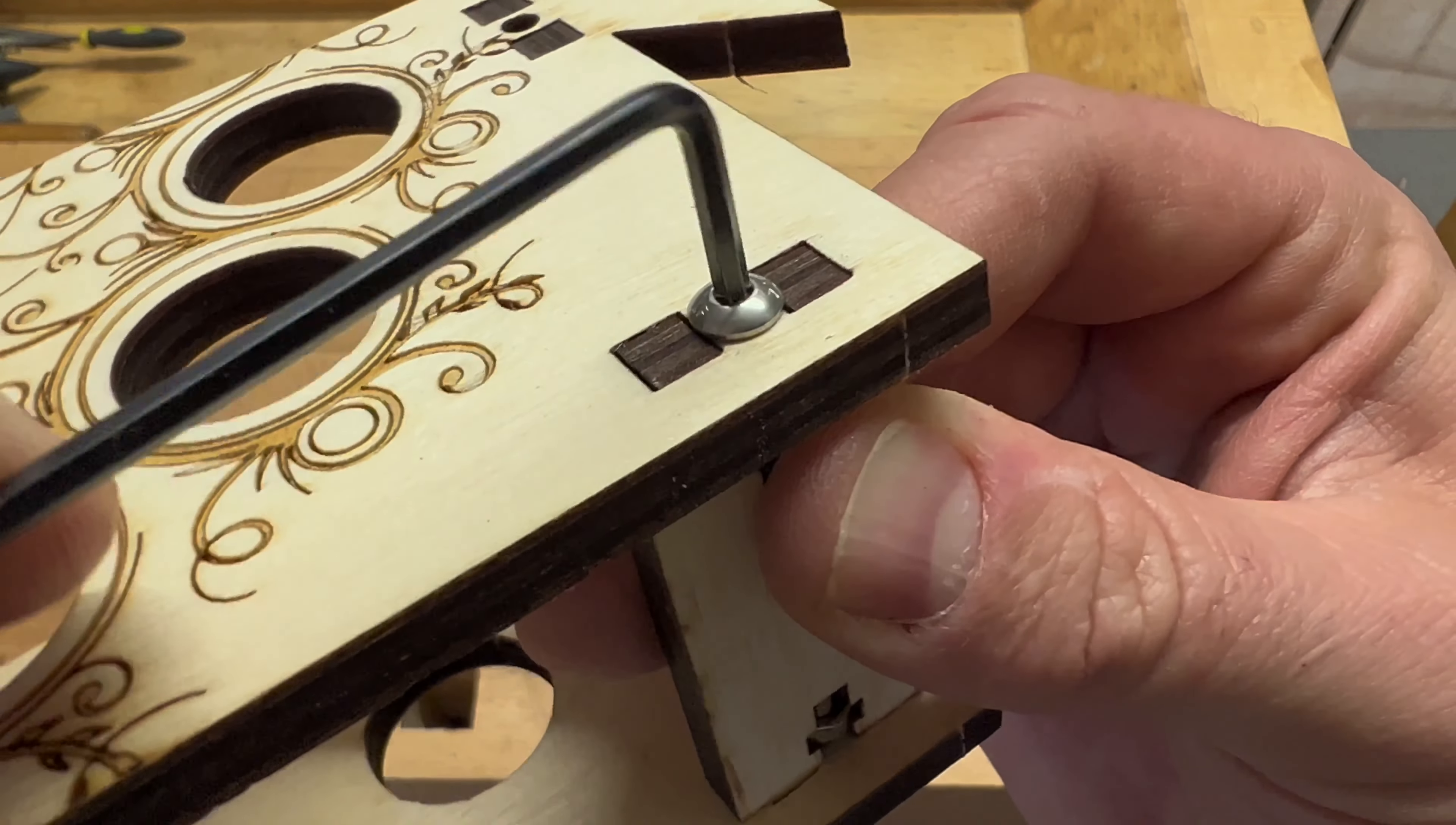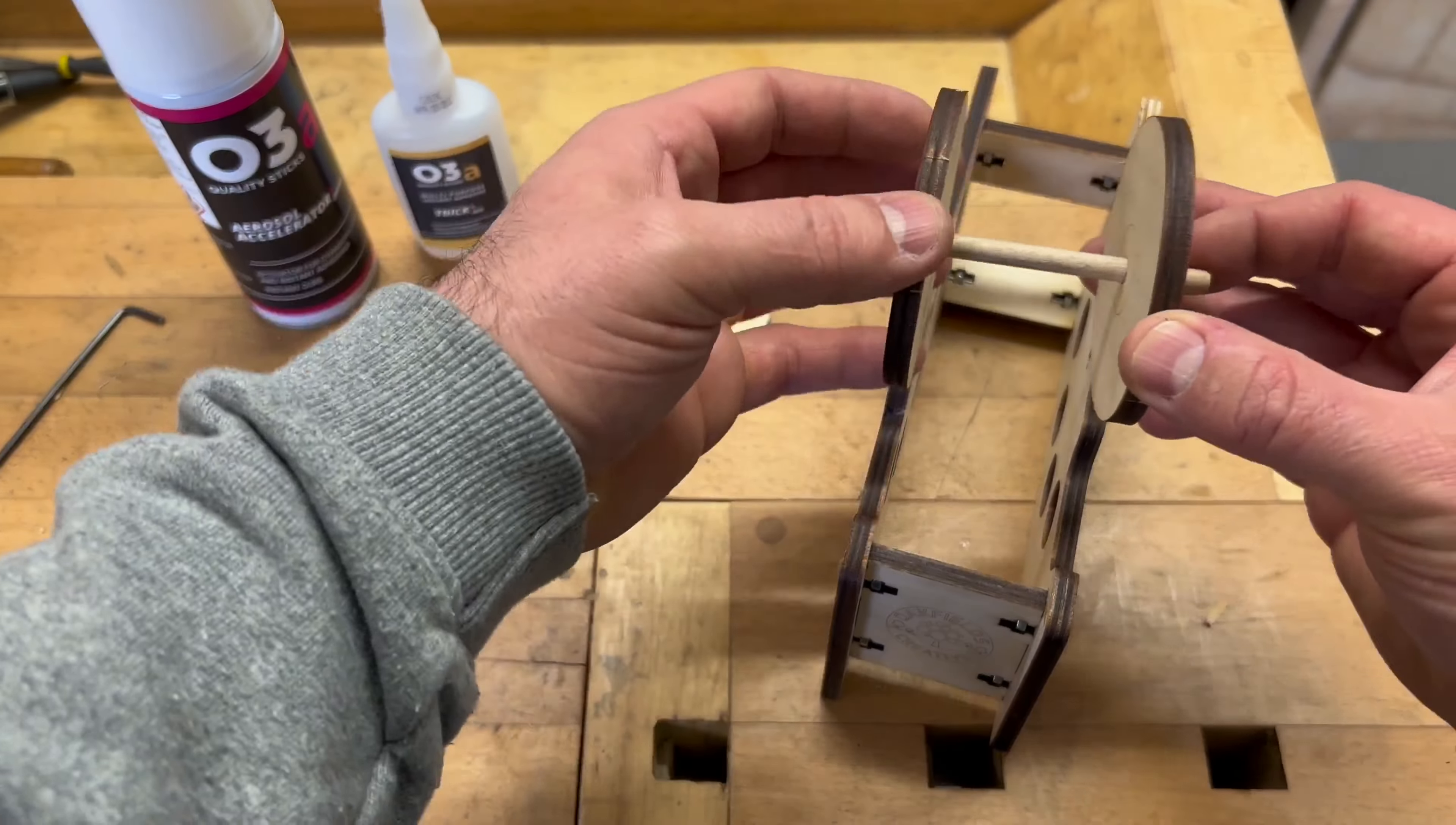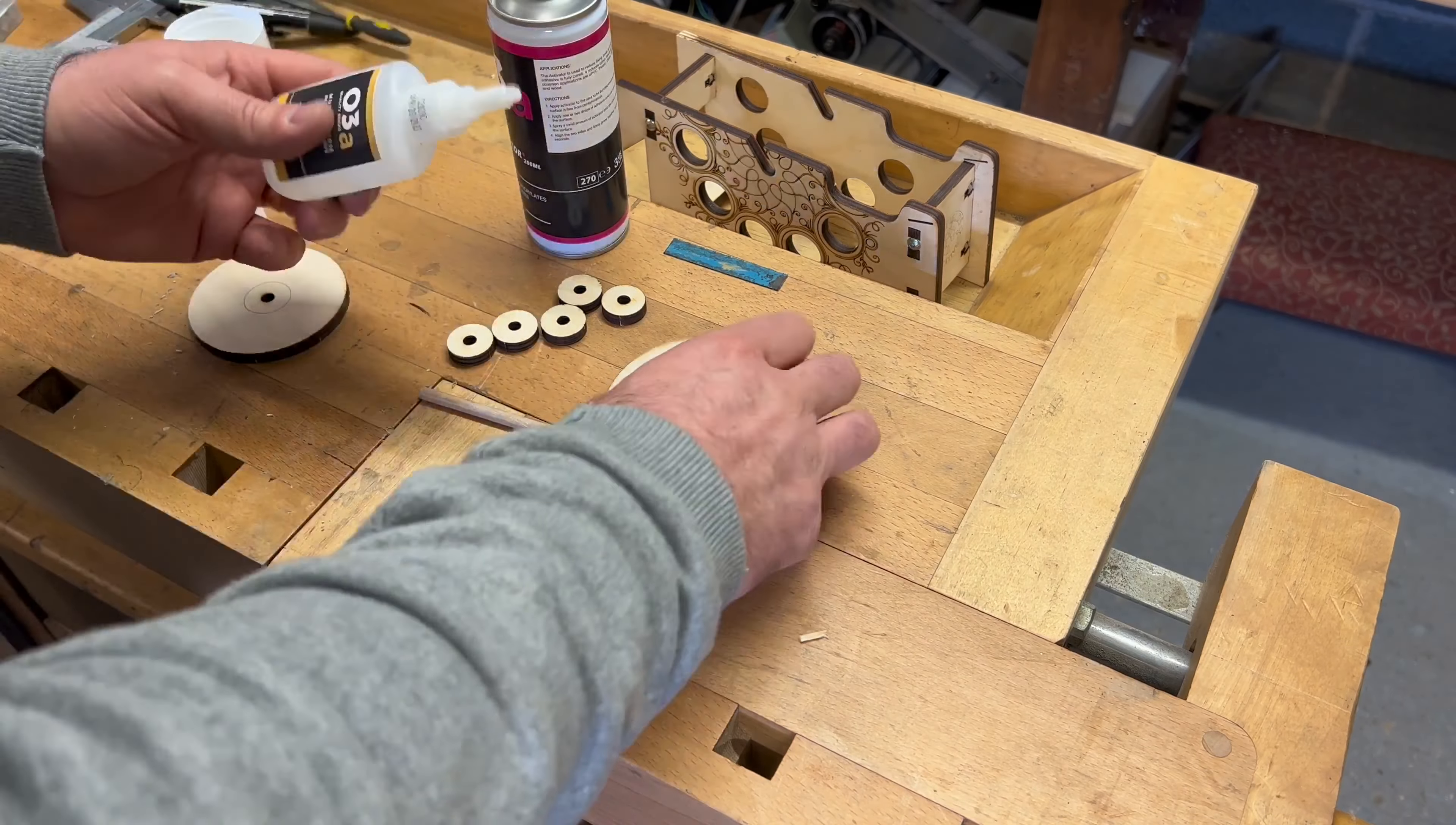Once the main body's all assembled, the next stage is to glue together the center section to hold the tape. To do this, I roughly put everything into position and marked down where I needed it to be to make sure that when it was glued it would all be in the right place to make the tape holder the correct size.